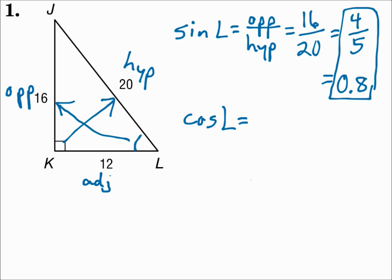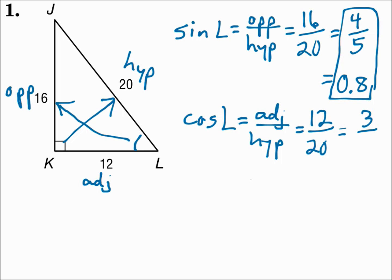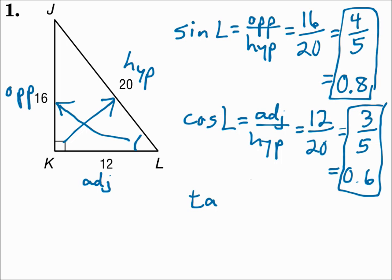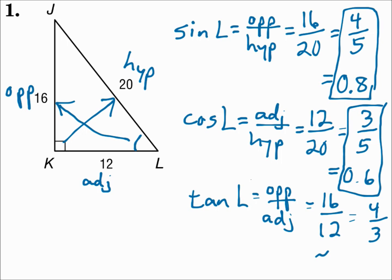Cosine of L is adjacent over hypotenuse. Adjacent is 12, hypotenuse is 20, which reduces to 3/5, and as a decimal is 0.6. Tangent of L equals opposite over adjacent. Opposite is 16, adjacent is 12, which reduces to 4/3, and as a decimal that's about 1.33. So use your sine, cosine, and tangent formulas and substitute in the side lengths for opposite, adjacent, and hypotenuse.